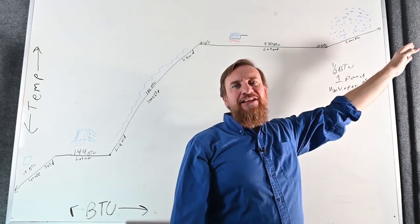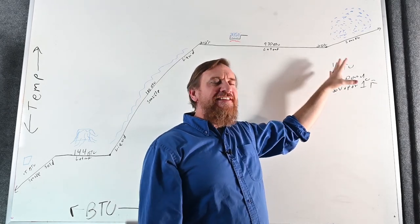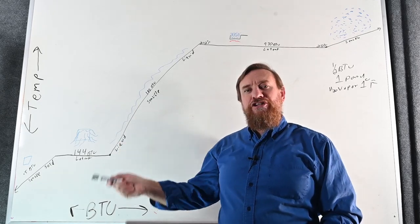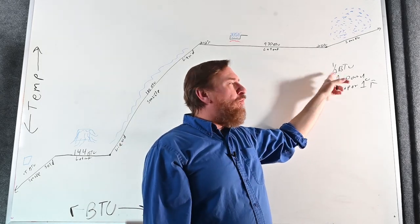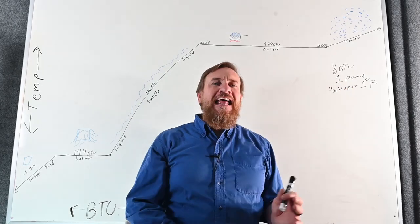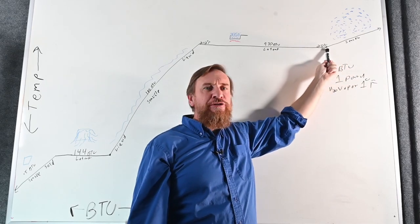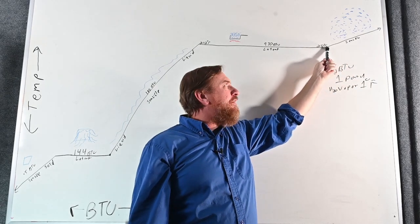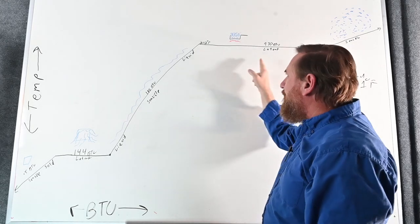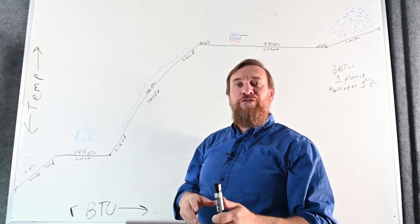Even though we can continue to add heat and raise the temperature of superheated vapor, because of its density it's only half a BTU. Remember, it takes one BTU to change one pound of water, but once it's water vapor it takes half a BTU to change one pound of water vapor. As we sensibly cool and de-superheat that vapor back to its saturation point at 212°F, we condense it — changing state from vapor back to liquid, rejecting another 970 BTUs at 212°F.